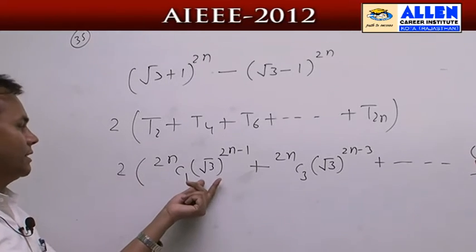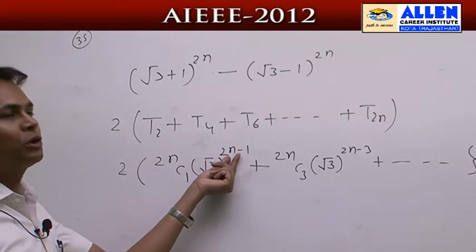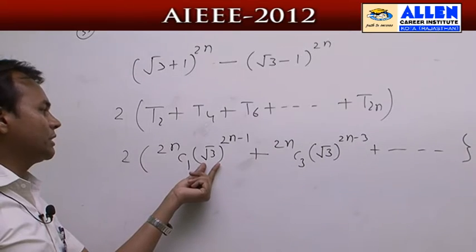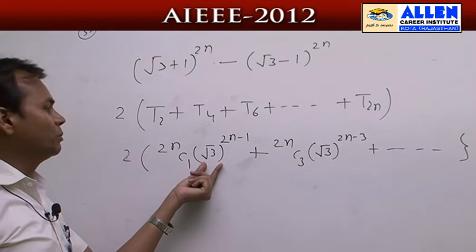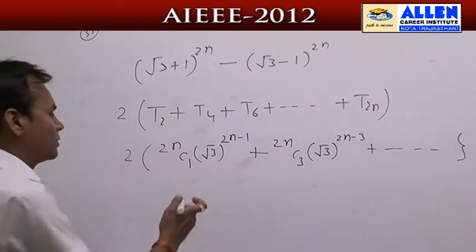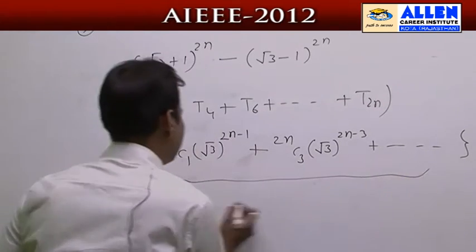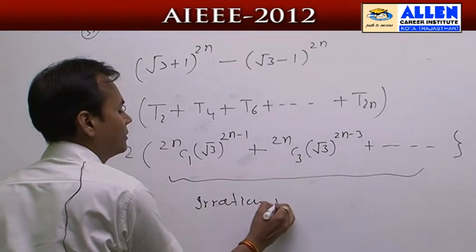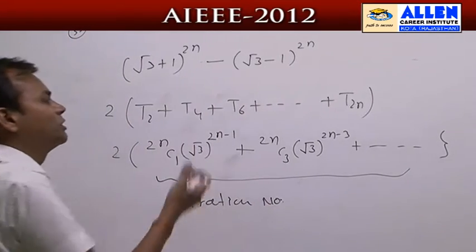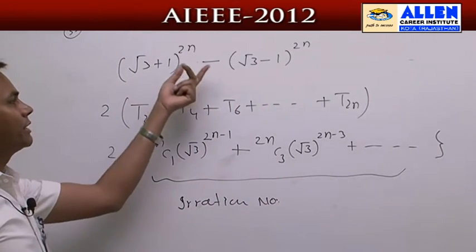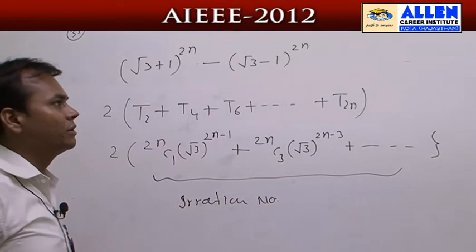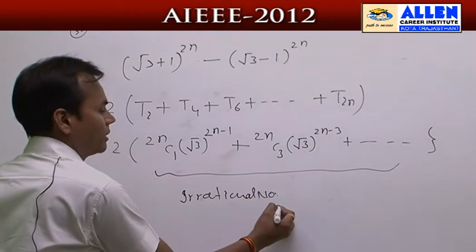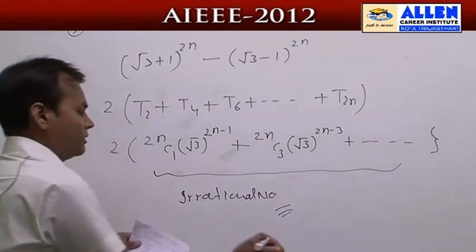Looking at t₂: it contains the factor (√3)^(2n−1), and since 2n−1 is an odd number, this expression involves a square root, which is irrational. Therefore the solution of (√3 + 1)^2n − (√3 − 1)^2n is an irrational number, which is option 2.